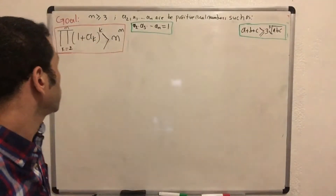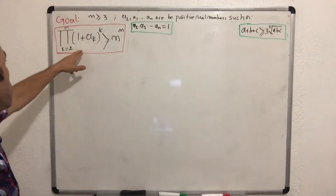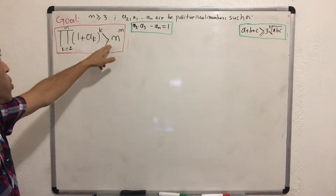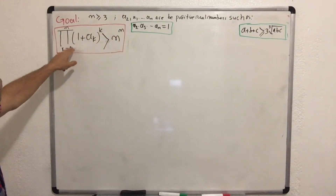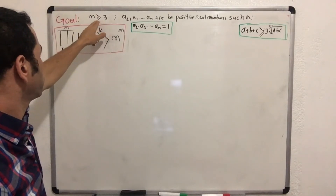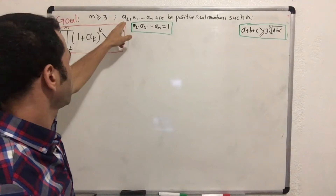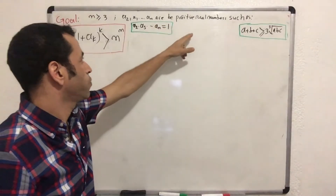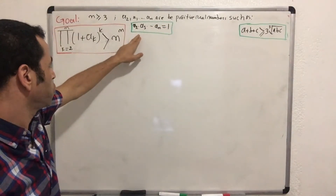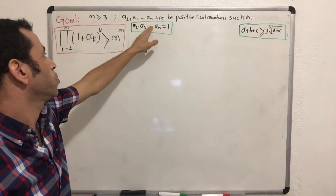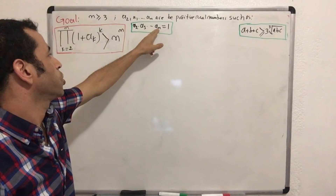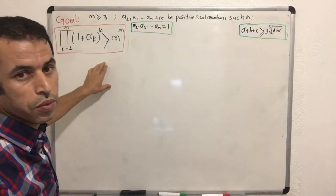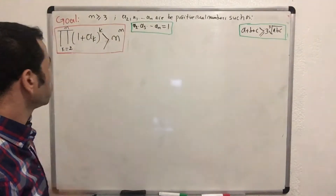Hi, good morning. In today's video I'm going to prove this inequality: the product of (1 + a_k)^k, for k from 2 to n, is strictly greater than n^n. For all integers n greater than or equal to 3, we have the condition that a_2, a_3, and so on until a_n are positive real numbers such that a_2 · a_3 · a_4 · ... · a_n = 1. This is IMO 2012, Problem 2.